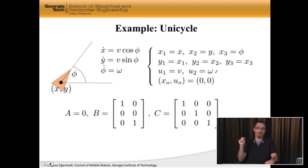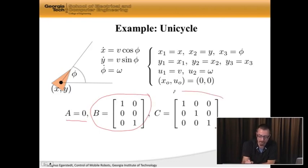If you do that, what you actually end up with, and I'm not going to show the different steps, you should do it yourself, is first of all, an A matrix that's zero, a B matrix that looks like this, and a C matrix that's the identity matrix, which is not surprising since we're measuring both the x, y position and the orientation of the robot.